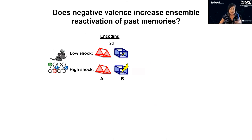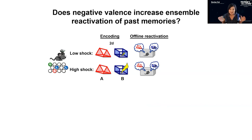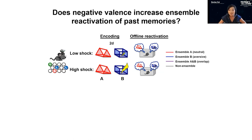To ask this question we used a slightly different paradigm with two groups doing calcium imaging in dorsal hippocampus. In one group the second context involved a low shock and in the other a high shock. We were really interested in what happens during the offline period — the first hour after encoding. The hypothesis was that increasing the shock would increase the likelihood of reactivation of the neural ensemble representing the red context.